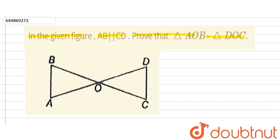So in triangle AOB and triangle DOC, angle AOB is equal to angle DOC because both are vertically opposite angles and angle OAB is equal to angle ODC.